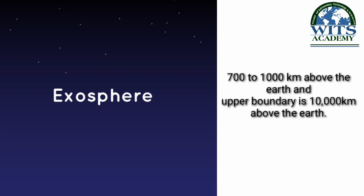Aur yeh atmosphere ki sabse last layer hai exosphere, jiske baad space yaani khala shuru ho jaata hai. Yeh zameen se 700 kilometer se lekar 1000 kilometer ki bulandi tak paai jaati hai, aur iski upper boundary zameen se takreeban 10,000 kilometer ki bulandi tak paai jaati hai. Hydrogen aur helium gas isi layer ka hissa hain, aur yeh bhi tasawwur kiya jaata hai ke is layer mein hawa bilkul bhi maujood nahi hoti. Hubble telescope zameen ka chakkar exosphere ki layer mein hi lagaati hai.